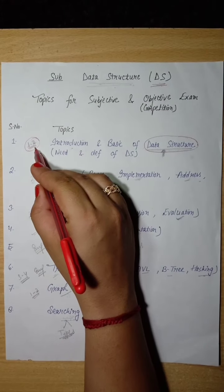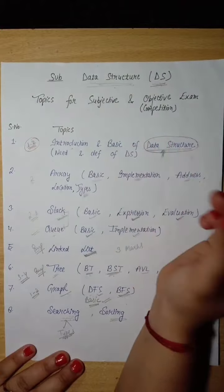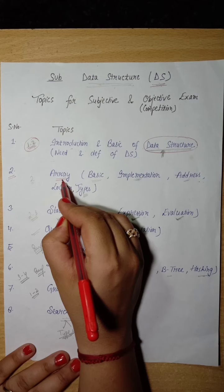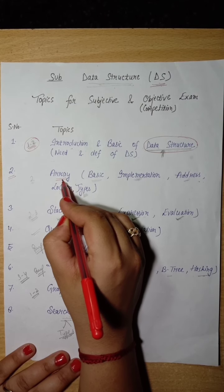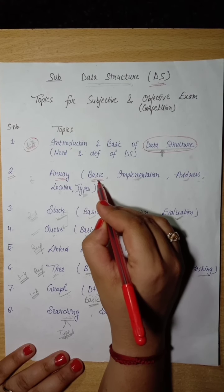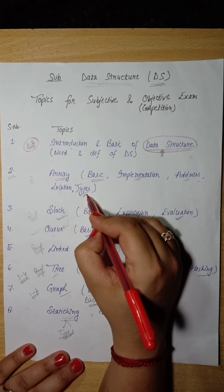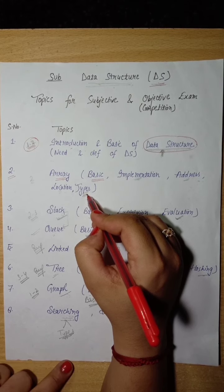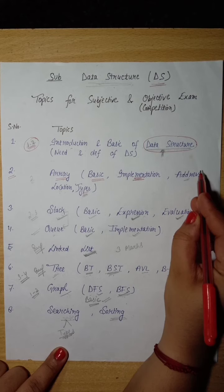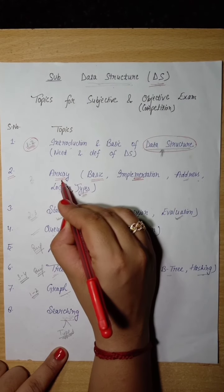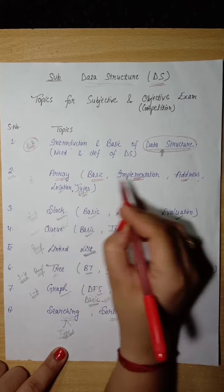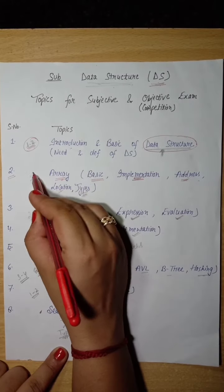Second, our topic is Array. This is what we have studied in first year, and this topic is repeated here. In this topic, we will study the basics, what are the types of array - one-dimensional, two-dimensional, and multi-dimensional array. We will study how we implement the array and how we find the address and location. If this is based on numerical, then we can see two marks from this topic.